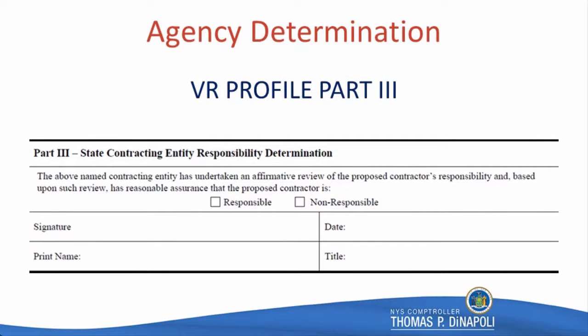When you have completed your VR review, fill out part 3. Check the appropriate determination, sign, and date it. Make sure that the review date is current. If it's older than 90 days from OSC receipt, it may not be considered current. Make sure the person signing the profile is an authorized signer for your agency. This also applies to electronic signatures.